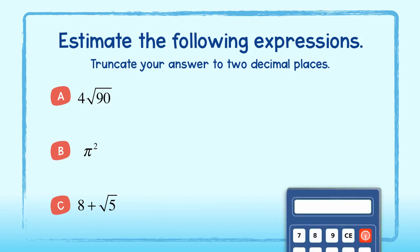Okay, let's do some calculations. 4 times the square root of 90 truncated to two decimal places is approximately 37 and 94 hundredths.